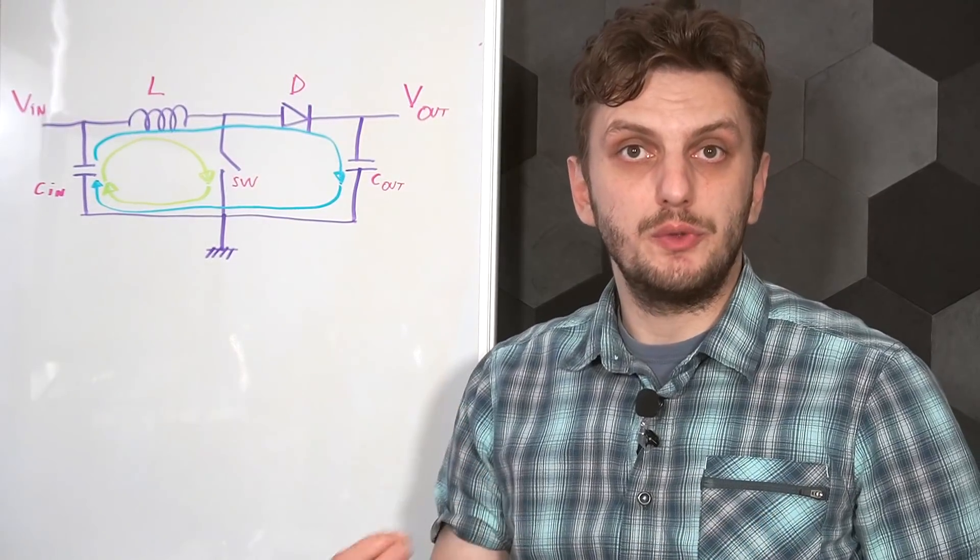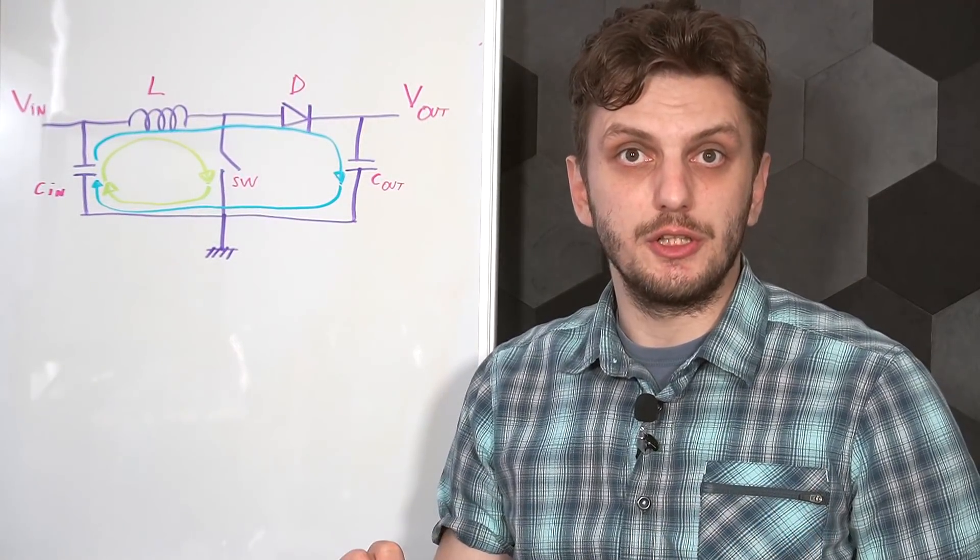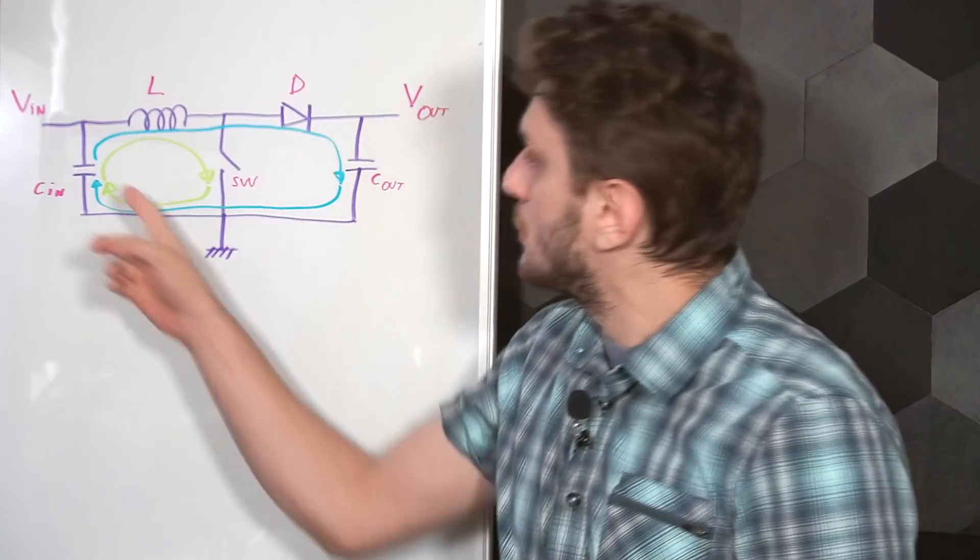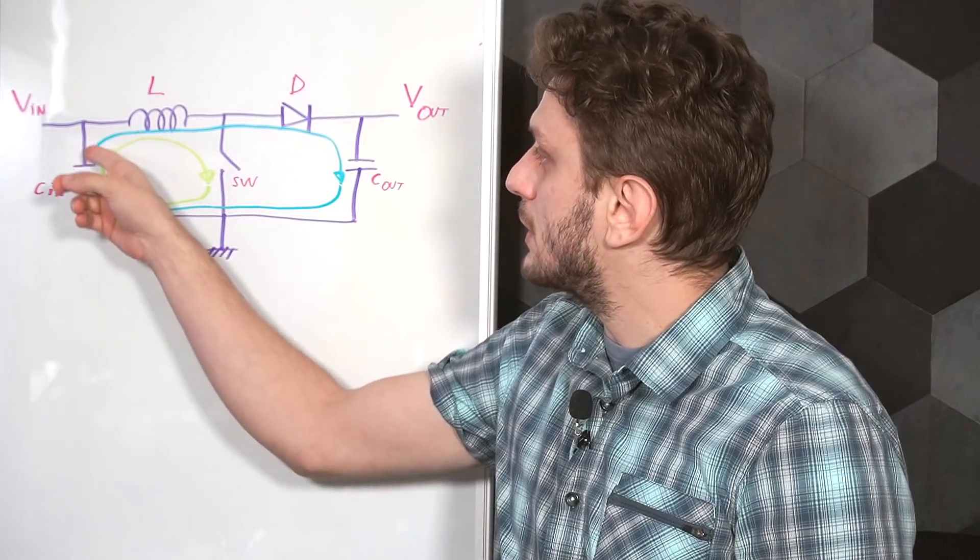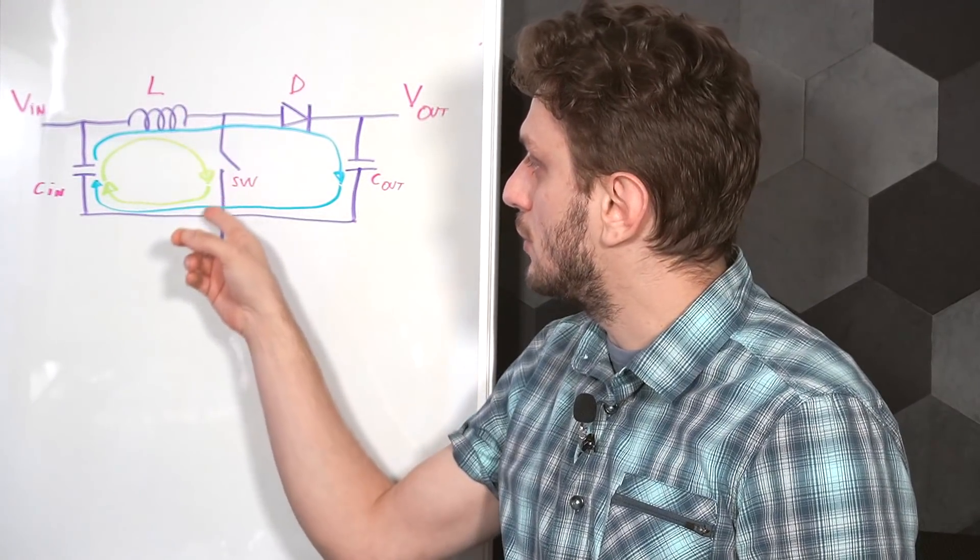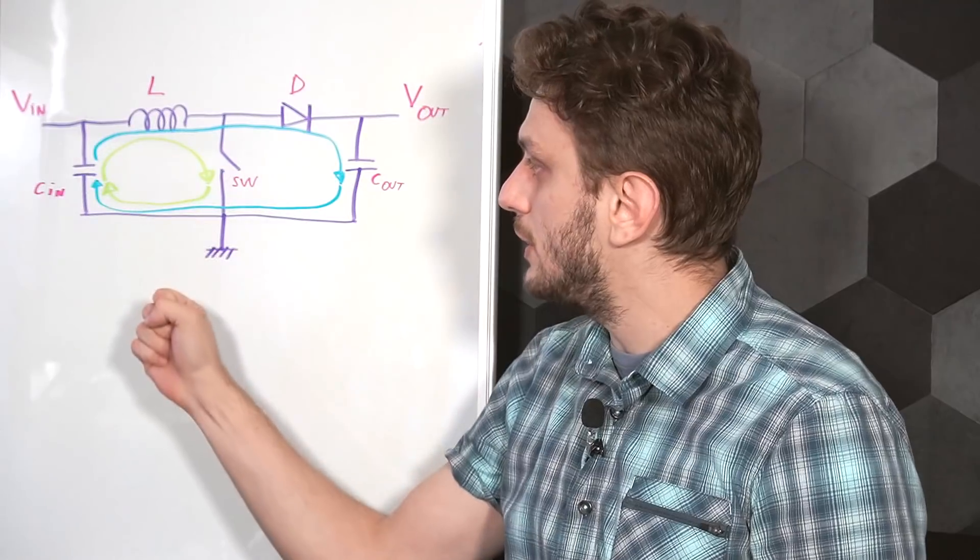But the same principles apply regardless of converter topology. So with this converter we have two cycles, charging and discharging of the inductor. So in the first cycle we got current from the input capacitor, charging the inductor, closing down through the switch and back through the ground.